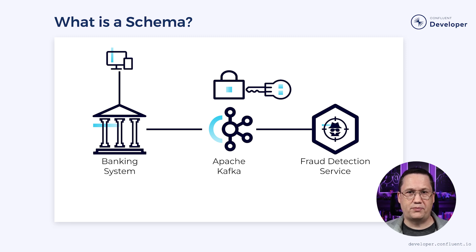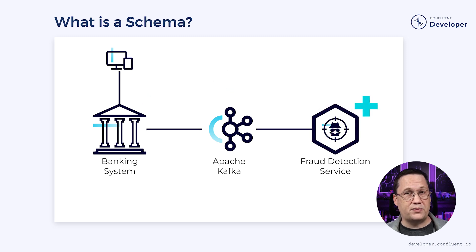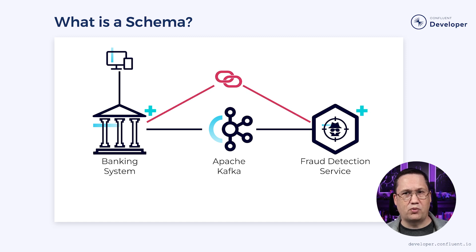Recently, Tributary learned there was an exploit available for the encryption algorithm they were using. As a result, they've been forced to update their encryption to a new protocol. But if they update the producer first, the consumer won't be able to decrypt the data. And if they update the consumer first, the messages won't be produced with the expected encryption. They could update both at the same time, but synchronizing the deployment will be difficult and may result in downtime. So what can they do?